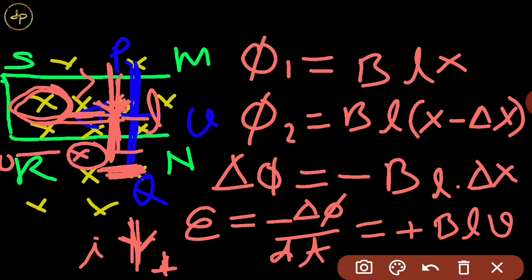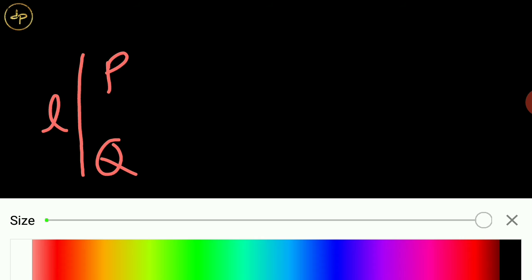Let us see the same derivation with another method. Suppose this is the PQ rod, which has a length L. There is a uniform magnetic field present everywhere. The rod is moving in this direction with velocity V. And due to this, there are so many charges in this rod. Suppose every charge Q is here.